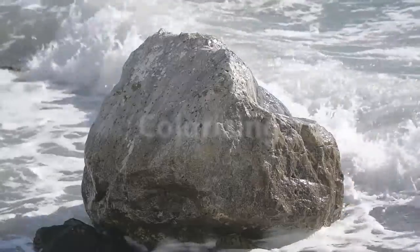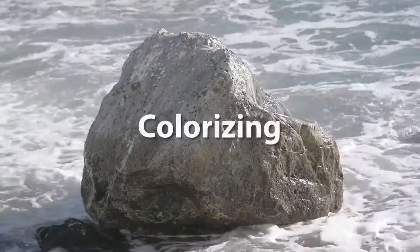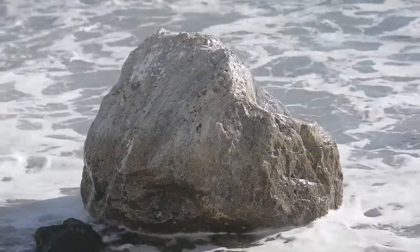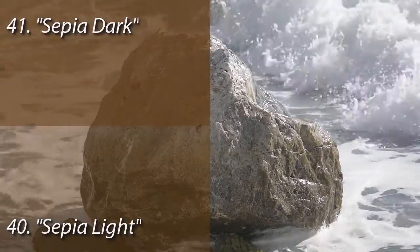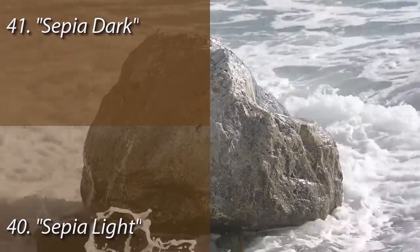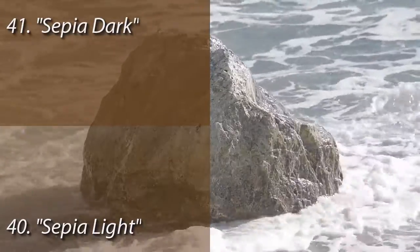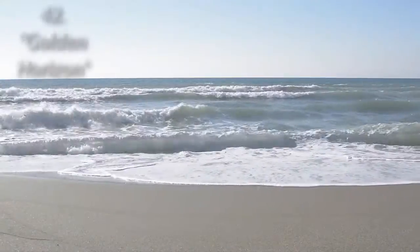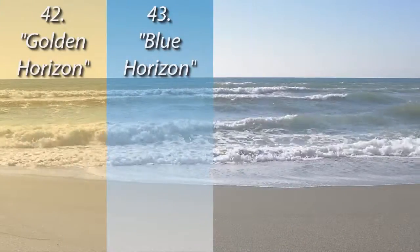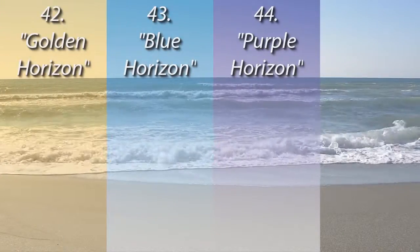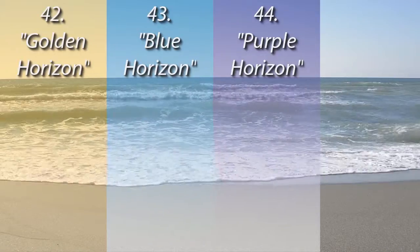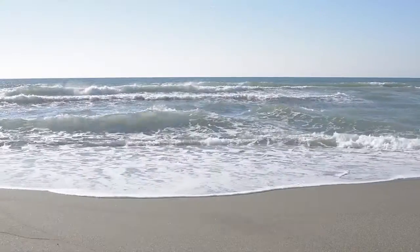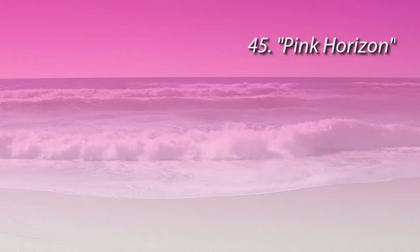Then we have a number of colorizing effects as well. To get the old fashioned look, you have a sepia light and a sepia dark. We also have a golden horizon, blue horizon, purple horizon, and finally a pink horizon that you can lay over your video clips. You can also combine these — for example, here I've added the pink horizon and the vignette together.